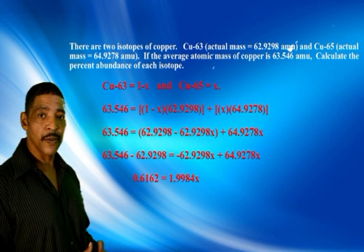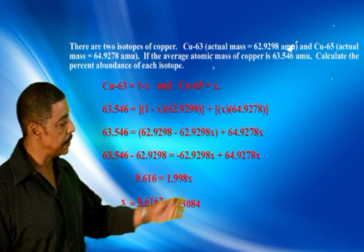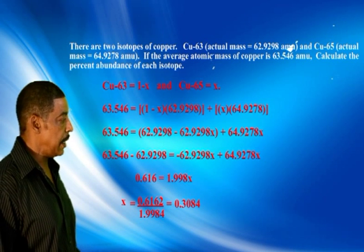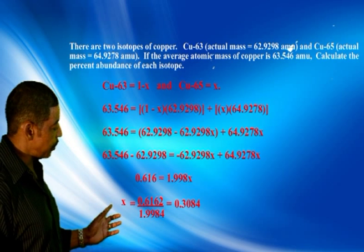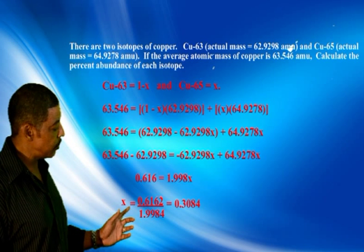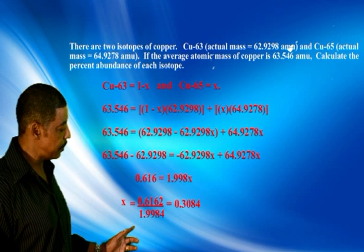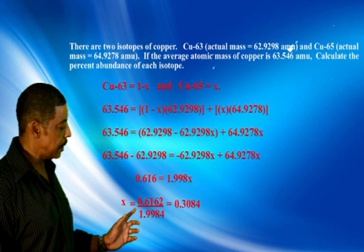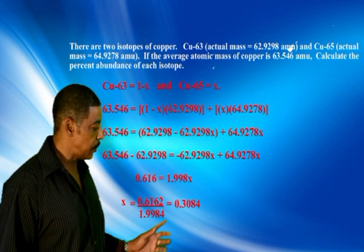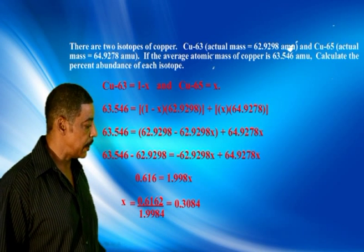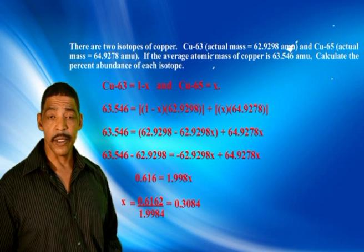To solve for x, we divide through by 1.9984. So x equals 0.6162 divided by 1.9984, which equals 0.3084.